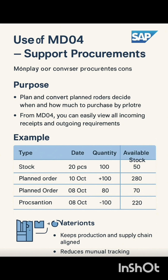MD04 also lets you take real action — not just view data. When MRP runs, SAP generates planned orders for materials and shortages. From MD04 you can review these orders, check dates, quantities, and stock, and instantly convert them into production orders or purchase requisitions — depending on whether the item is made in-house or procured externally. For example, if MRP created a planned order of 40 units, you can directly convert it to a production order from MD04, ensuring manufacturing starts on time. MD04 is your control center for planning and converting orders efficiently.